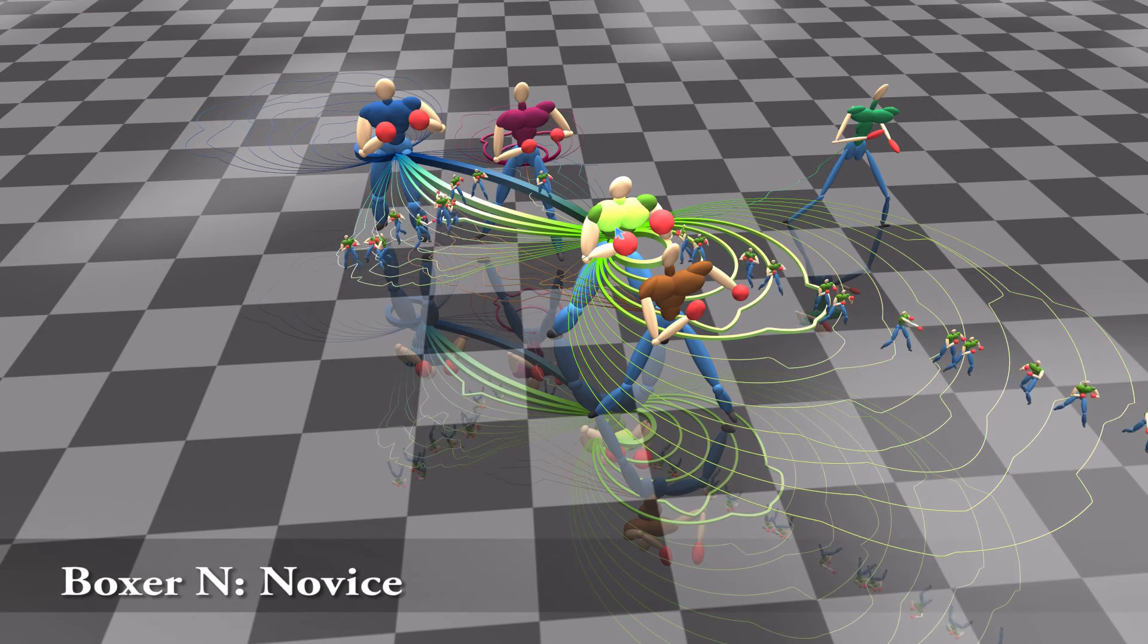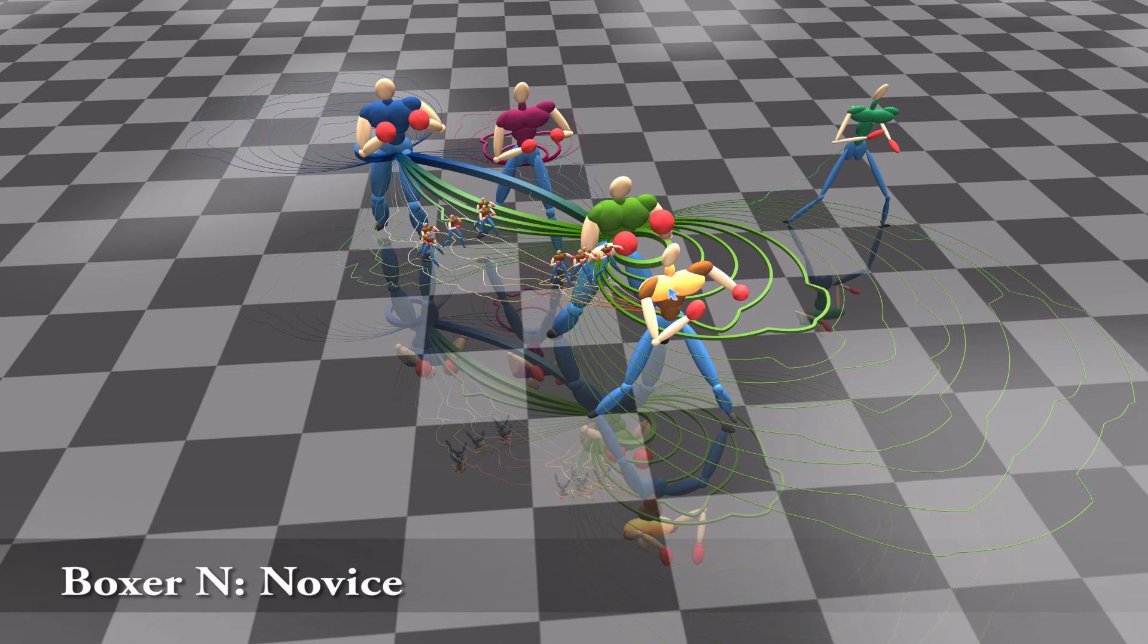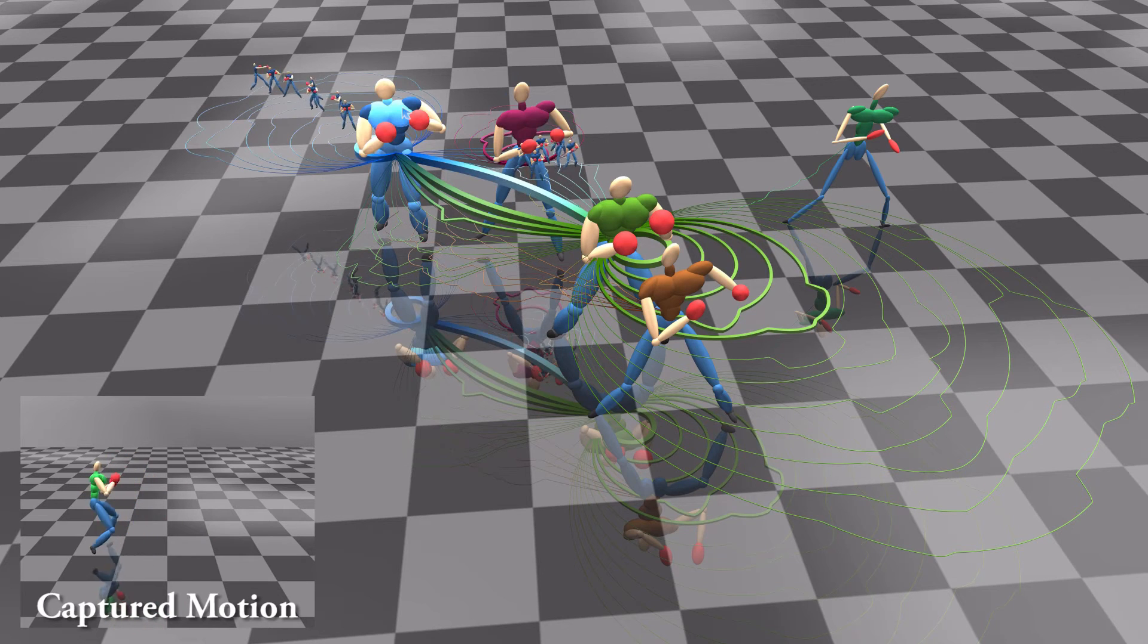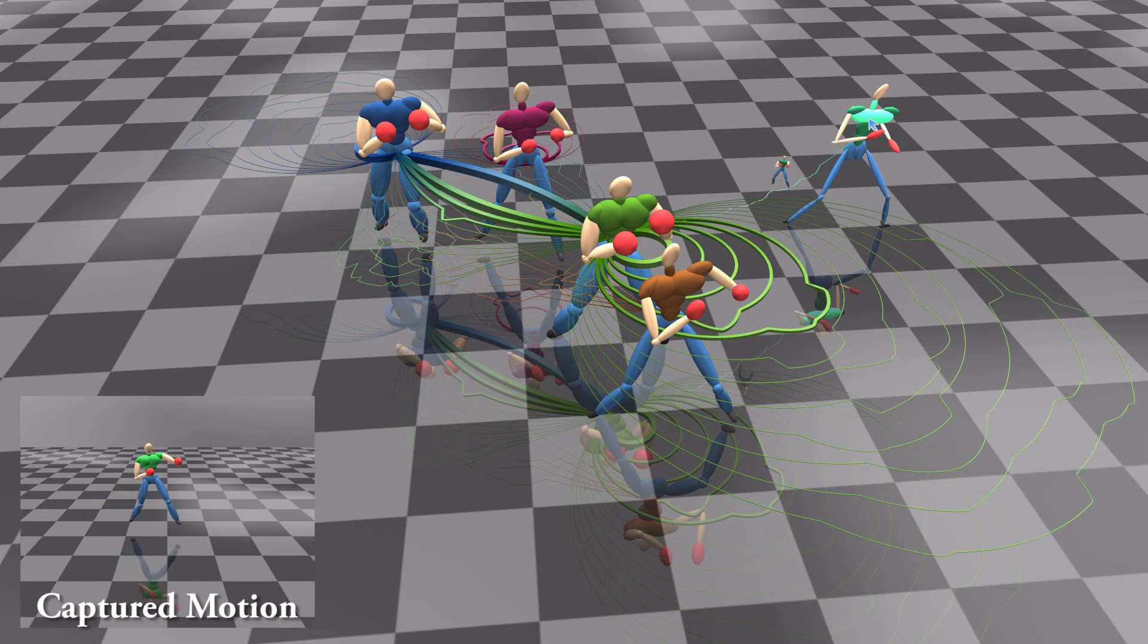This is a lower-level boxer. He has multiple postures with different leg movements to start actions. The green one is the relatively major posture in which the legs are wider apart. The blue one is the secondary posture with narrower leg distance.